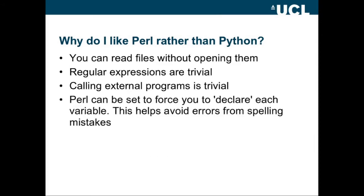Perl can be set to force you to declare each variable that you use, and this really helps avoid errors from spelling mistakes. It's all too easy to misname a variable, and in Python, you wouldn't know. It's simply a new variable name, so you could be using count in one place and cnt in another place, and Python wouldn't let you know. Perl would.